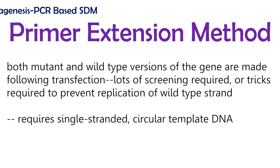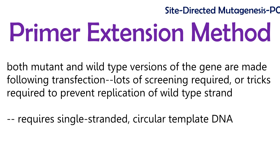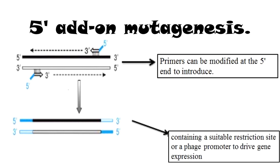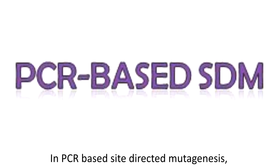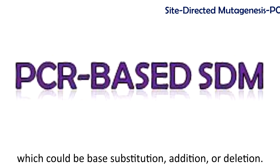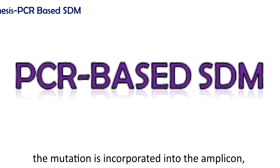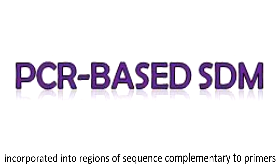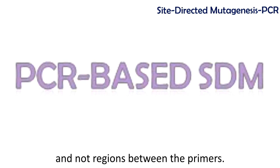In the primer extension method, both mutant and wild-type versions of the gene are made following transfection, requiring lots of screening or tricks to prevent replication of the wild-type strand, and therefore single-stranded circular template DNA is required. In 5' end mutagenesis, primers can be modified at the 5' end to introduce a suitable restriction site or a promoter to drive gene expression. In PCR-based site-directed mutagenesis, primers are designed to include the desired change, which could be base substitution, addition, or deletion. During PCR, the mutation is incorporated into the amplicon, replacing the original sequence. Mutations introduced by PCR can only be incorporated into regions complementary to the primers.